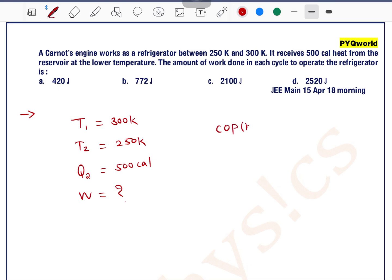We know that coefficient of performance K can be written as Q2, the amount of heat extracted per unit work, or this can be written as Q2 divided by W, or this can be written as T2 divided by T1 minus T2.